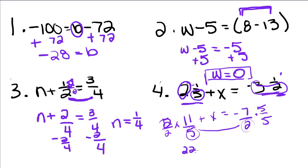So we're going to have to multiply this top and bottom by 2, and this top and bottom by 5. So 22 over 10 plus x is equal to negative 35 over 10. Because remember, we multiply the tops and the bottoms together.